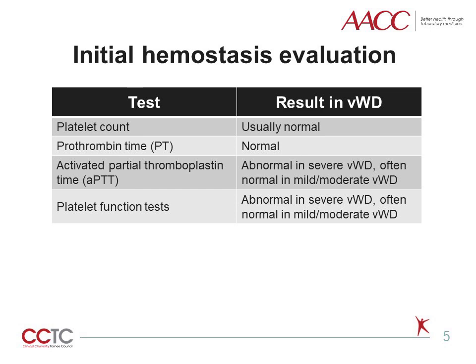The platelet count is normal in most forms of von Willebrand disease, with the exception of type IIb and platelet type, also known as pseudo-von Willebrand disease, which are characterized by gain-of-function mutations that cause increased von Willebrand factor-platelet interaction, and subsequent clearance of high molecular weight multimers and platelets. The APTT is often normal in von Willebrand disease, but is prolonged in more severe forms where factor VIII activity is significantly decreased.